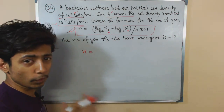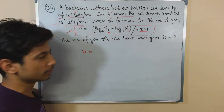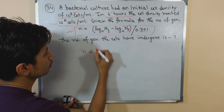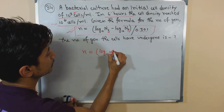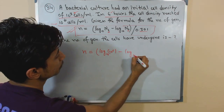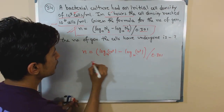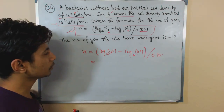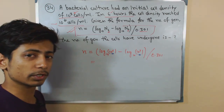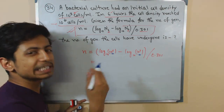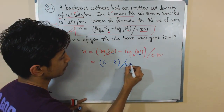The formula works if you know the start density and ending density. So n equals log of 10 to the power 6, minus log of 10 to the power 3, divided by 0.301. Using simple log formulas, log of 10 to the power 6 is 6, and log of 10 to the power 3 is 3. So this becomes 6 minus 3, divided by 0.301, which is 3 divided by 0.301.